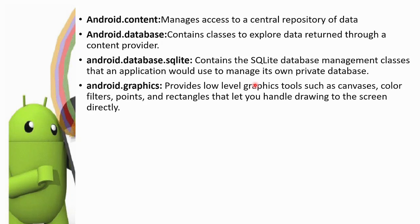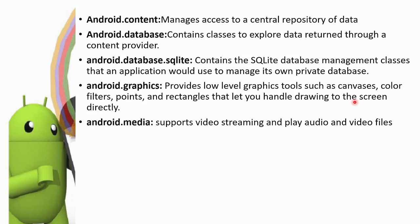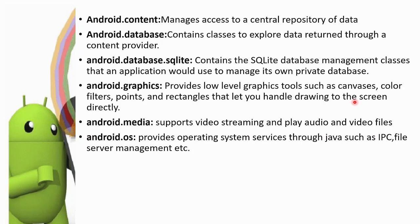android.graphics provides low-level graphics tools such as canvas, color filter, point, and rectangle that let you handle drawing to the screen. android.media supports video streaming and playing audio and video files. android.os is used for operating system functionality like inter-process communication, file server management, etc. Operating system services through Java are used to support android.os.